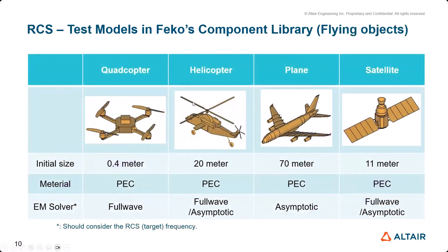I also added some useful flying RCS objects which are supported by FEKO component library: quadcopter whose length is 0.4 meter, helicopter 20 meter, plane (commercial airplane) 70 meter, and satellite 11 meter. These are default dimensions.